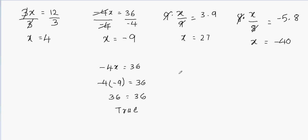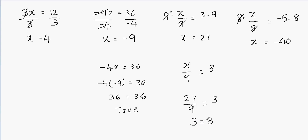For the equation x over 9 equals 3, we got x equals 27. Plugging in: 27 divided by 9 should equal 3. And indeed, 27 divided by 9 is 3, so 3 equals 3 — the equation is true. Our answer is absolutely correct. That's how you verify whether your answer is correct or not.